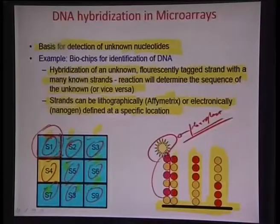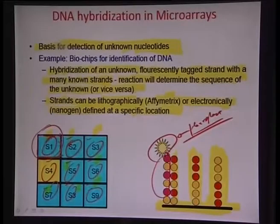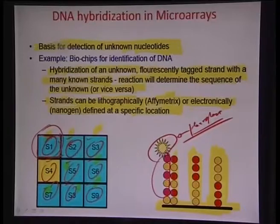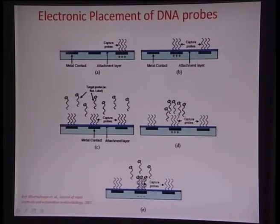There are two approaches: one is light-directed synthesis where the DNA strand is placed on the surface using a light-directed approach, and the other is electronically addressing the strand to a particular position using an electronic addressing system — as normally done by Nanogen. Let us look at how DNA probes are electronically placed, as used by Nanogen.